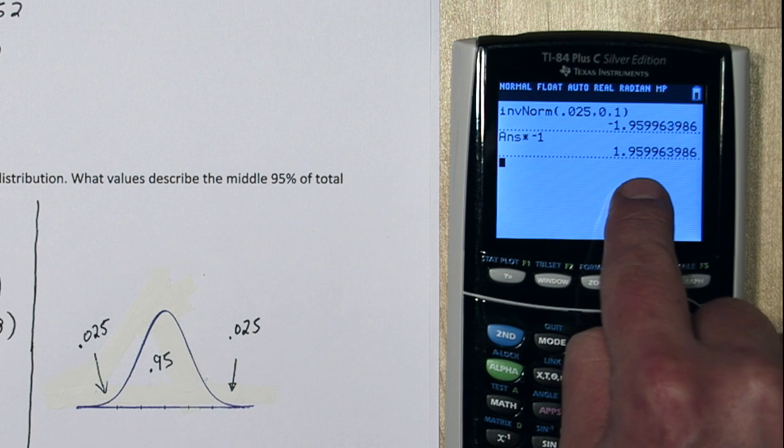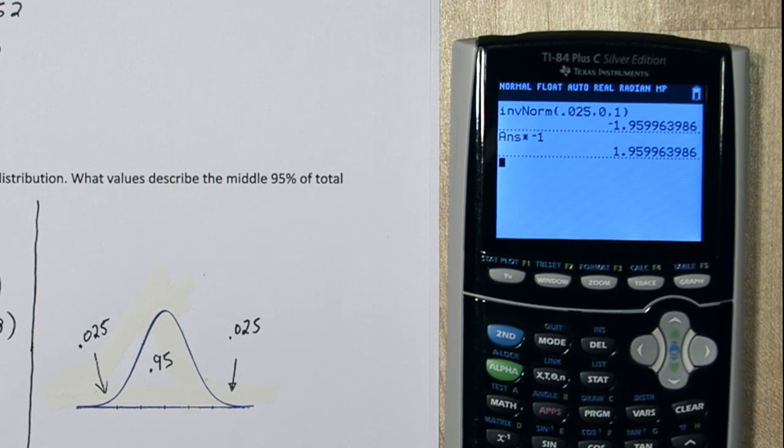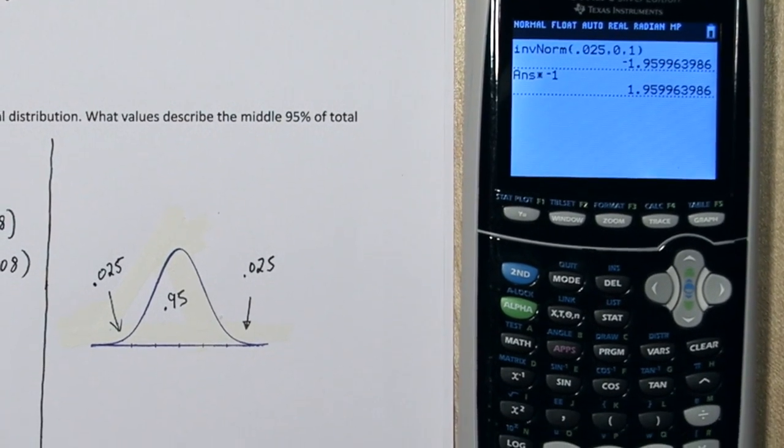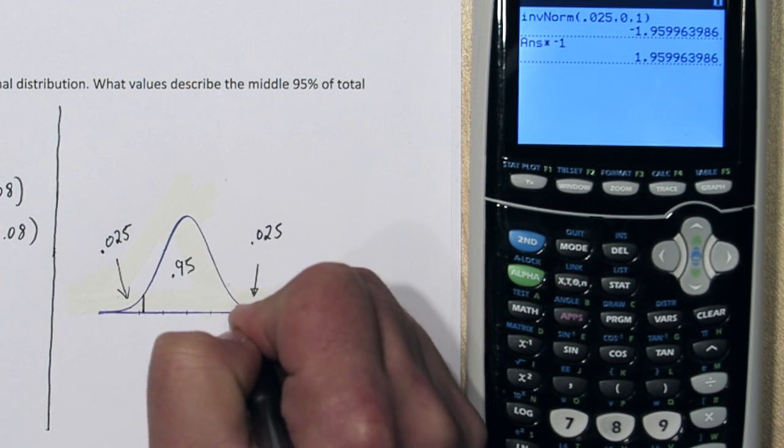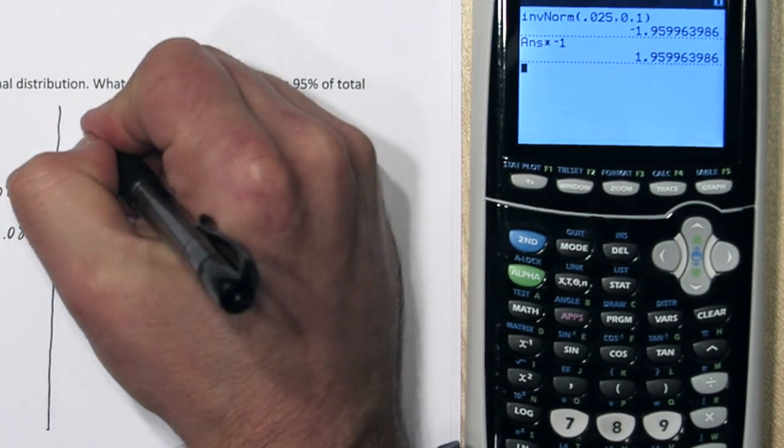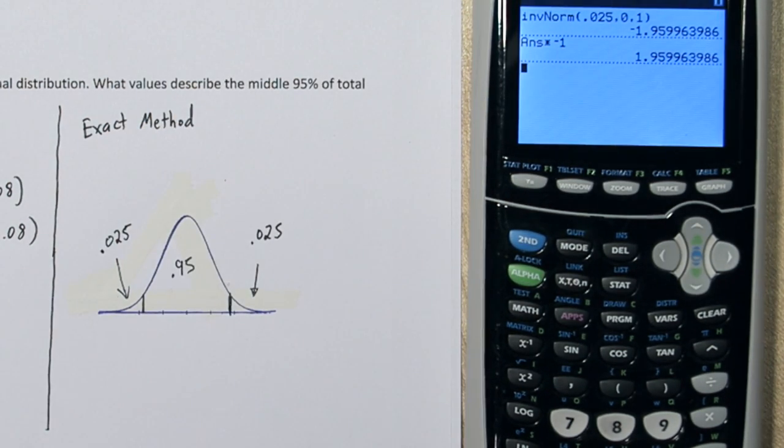I need to go this many standard deviations in each direction to cut off 95%. So that's probably about here to here. So we'll call this the exact method.